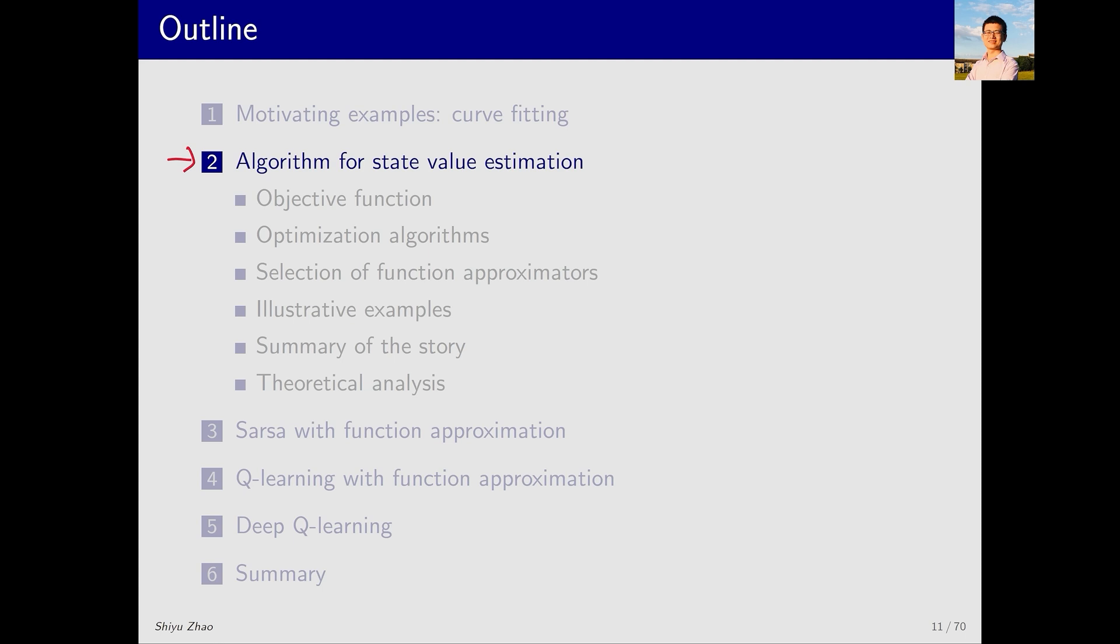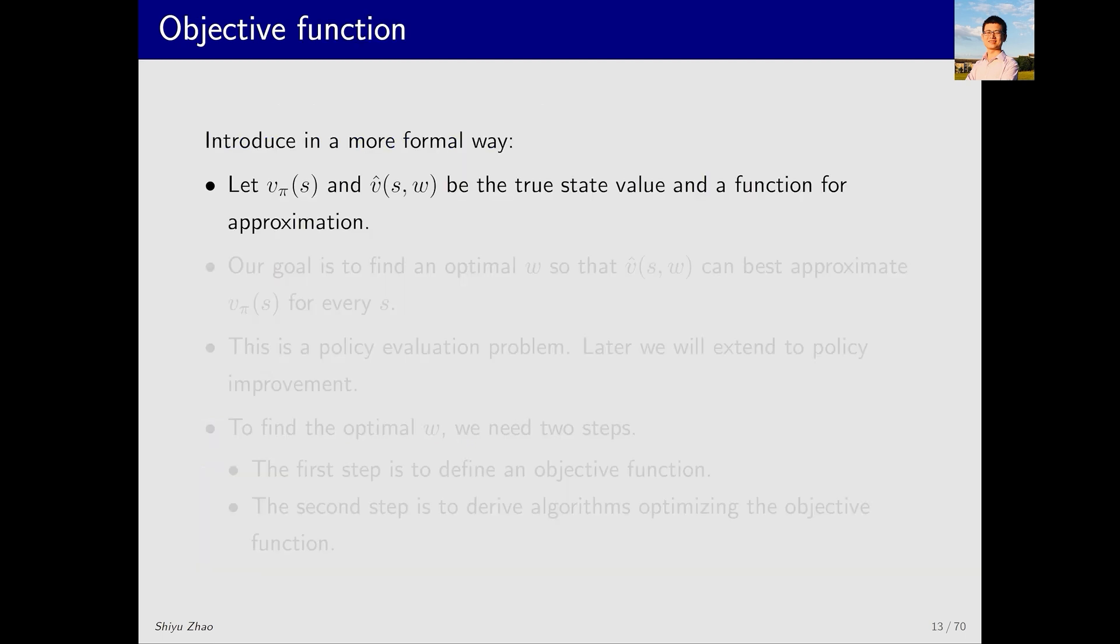This section is very important in this lecture because it reveals the fundamental ideas and concepts of value function methods. Once you understand this section, learning the subsequent algorithms in sections 3, 4 and 5 will be much easier. Let's first look at the objective function. v_π(s) is the true state value of s and v hat is its estimated value.